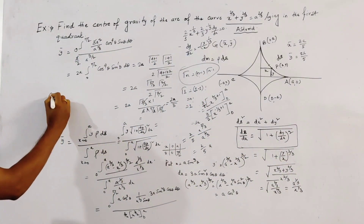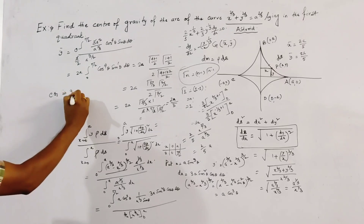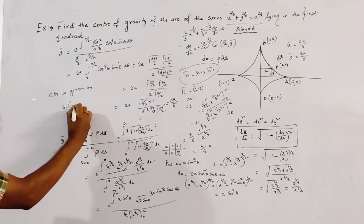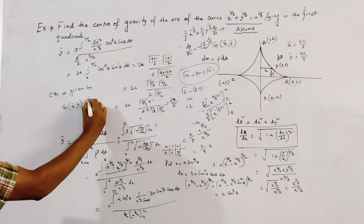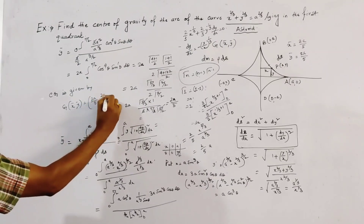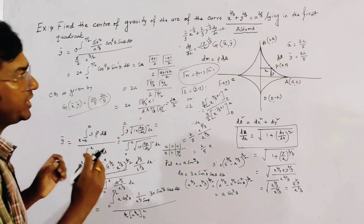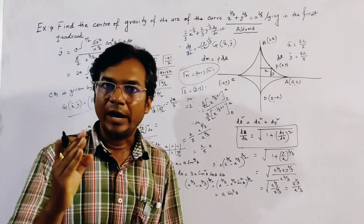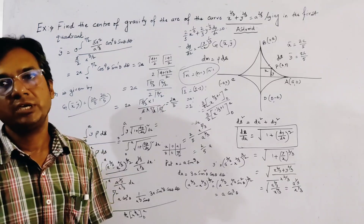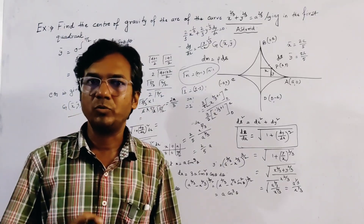So the center of gravity G is given by (x̄, ȳ) = (2a/5, 2a/5). This is a very important problem from Nagpur University previous year question paper. Thank you for watching.